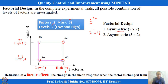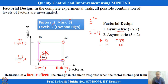When A is at low level and B is at low level, the CTQ response is 20. When A is at high level and B is at low level, the output is 40. When A is at low level and B at high level, the response is 30. When both are at high level, the response is 52. These are the 4 complete experimental trials.